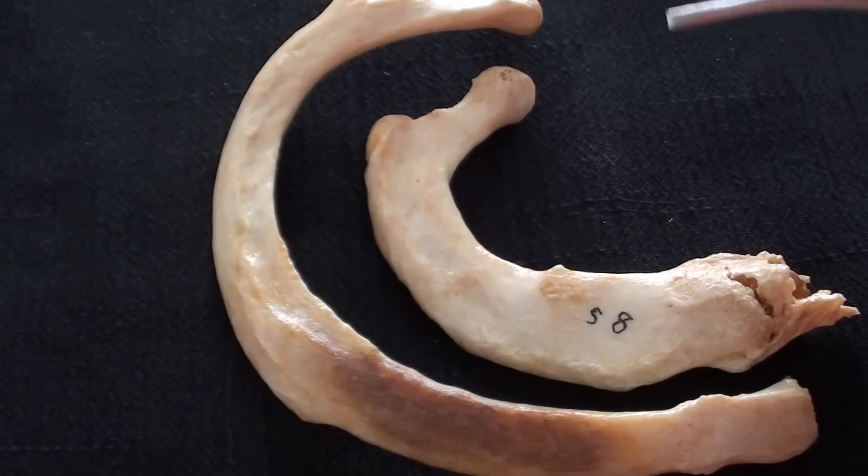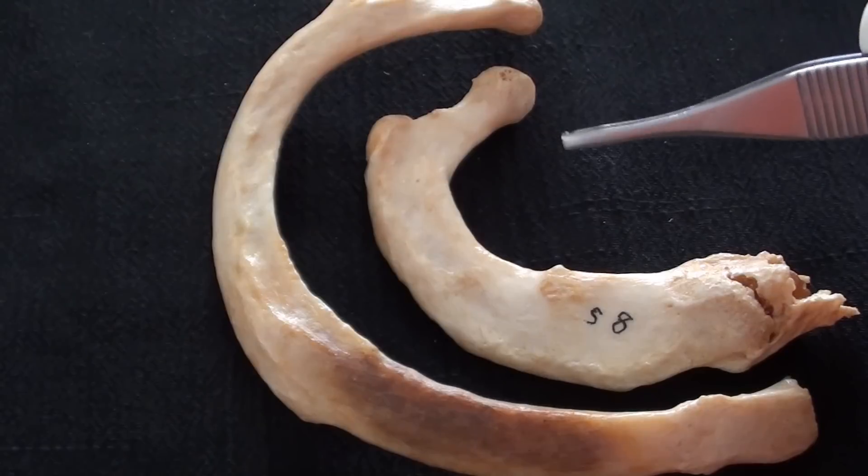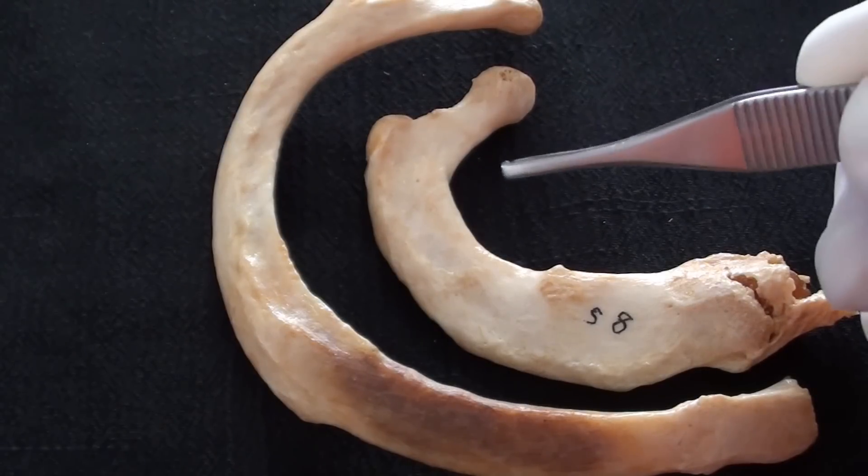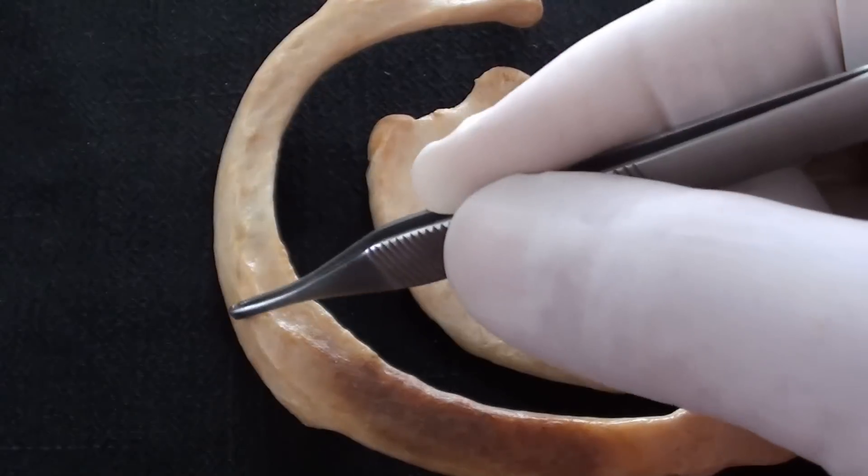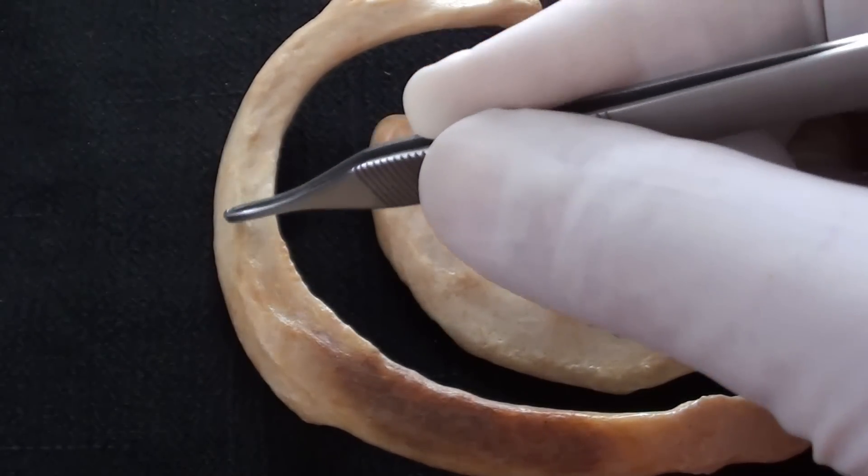Rib number two also has upper and lower surface, however, the only thing that would make it truly different compared to other typical ribs is this area of interesting roughness that other ribs should not possess.